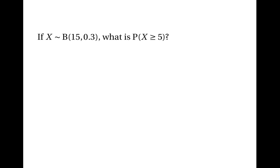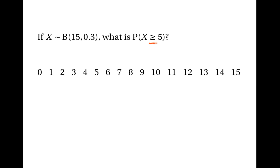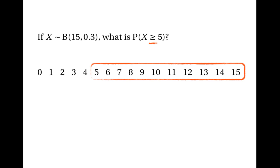Suppose that X has the binomial distribution with 15 trials and 0.3 as the probability of success. What's the probability that X is greater than or equal to 5? This question is different because it's asking about the probability of X being greater than or equal to something, whereas the probability tables give us the chance of getting less than or equal to something. If X is greater than or equal to 5, that's 5 or more, which is the opposite of being 4 or fewer. So we can work out the probability that X is greater than or equal to 5 by doing 1 minus the probability that X is less than or equal to 4.